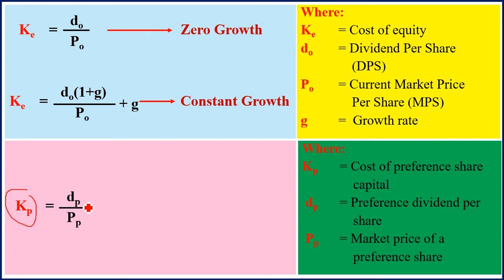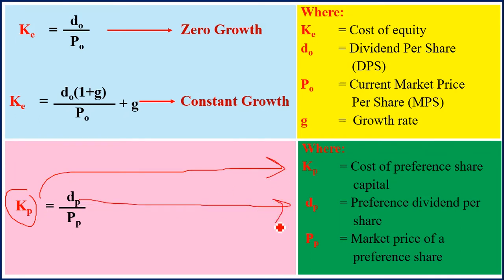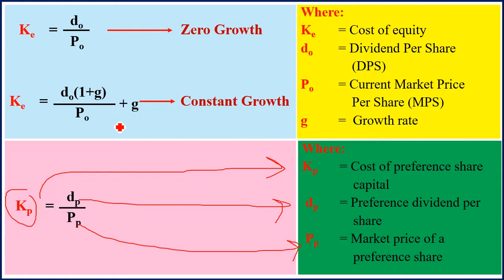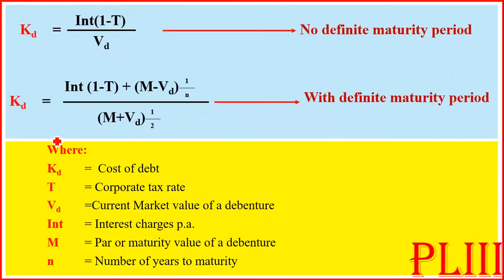The cost of perpetual preference shares is given by Kp = Dp / Pp, where Kp is the cost of preferential capital, Dp is the dividend per preference share, and Pp is the market price per preference share. It's important to understand that preference shareholders have preferential rights — they are paid dividends before ordinary shareholders.